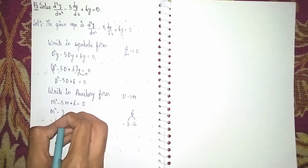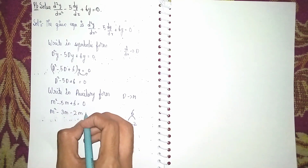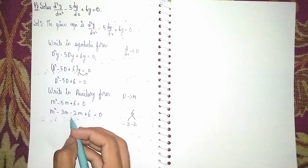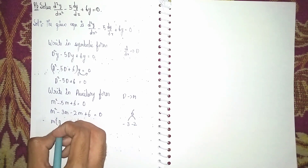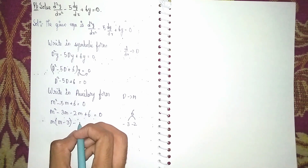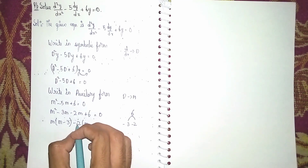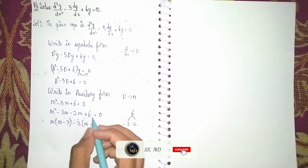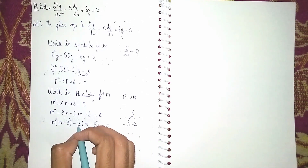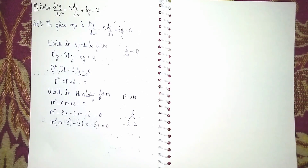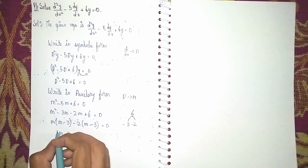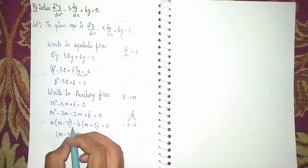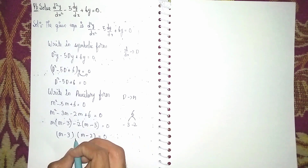It becomes m² minus 3m minus 2m plus 6 is equal to 0. Taking m common from the first two terms gives m(m minus 3), and taking minus 2 common from the last two terms gives minus 2(m minus 3). So we get (m minus 3)(m minus 2) is equal to 0.